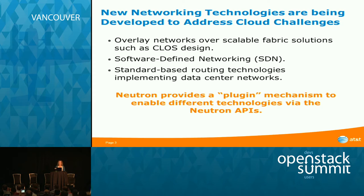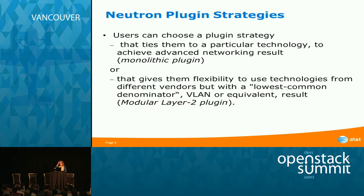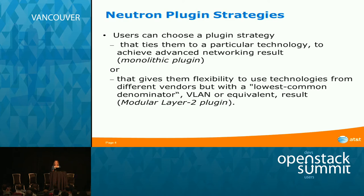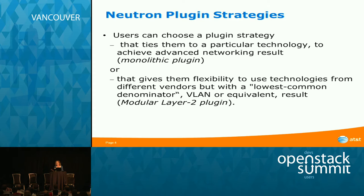Neutron's architecture is very flexible and extensible, mainly through its plugin mechanism and API extensions that allow different technologies to be implemented, enabling innovation. There are two Neutron plugin strategies. One ties to a particular technology but allows for advancing networking results in terms of scalability, manageability, or features. These plugins are called monolithic or standalone plugins — they're not necessarily proprietary; there are open source monolithic plugins.